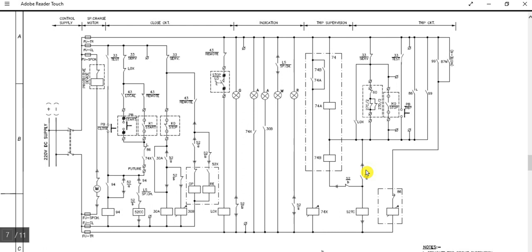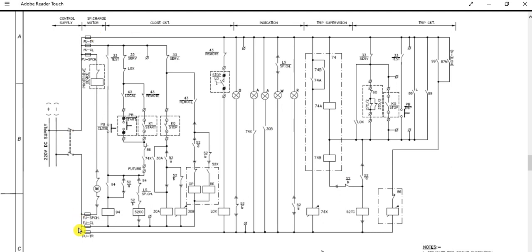Today I will cover the control circuit schematic for the motor feeder. This is an 11kV motor feeder control schematic drawing. The control supply is 220 volt DC — the positive bus is at the top and the negative bus is below.